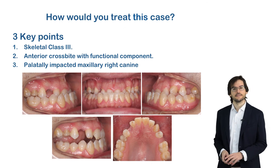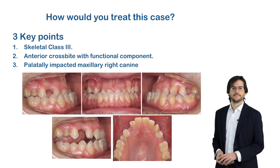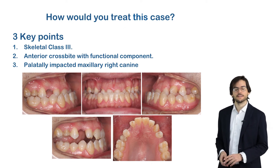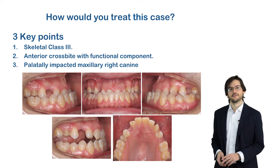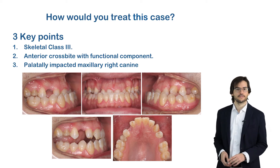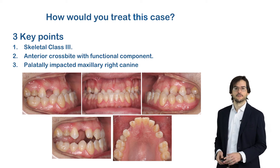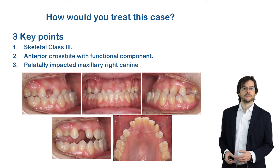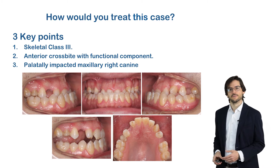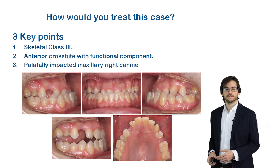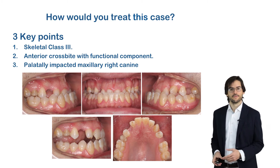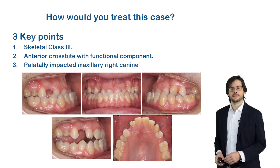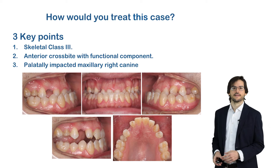How would you treat this case? This case has three important key points. Number one: skeletal Class III malocclusion. Number two: anterior crossbite with a functional component. And number three: a palatally impacted maxillary right canine.